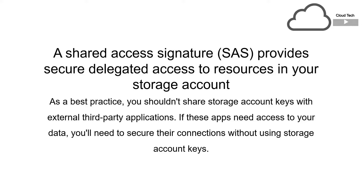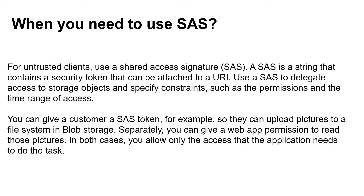Consider this scenario: you have a storage account for your application and you want a third-party vendor to upload some documents or images to your storage blob. Normally, to upload a file into our blob we use the connection string available under access keys. But if we provide access keys, the third-party vendor will be able to access files, queues, and tables in our storage account, which is not acceptable. The third-party vendor is supposed to access only our blob, so in that case we can use Shared Access Signature for untrusted clients.